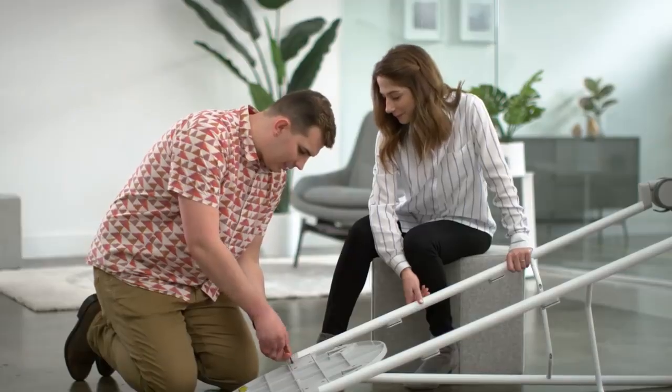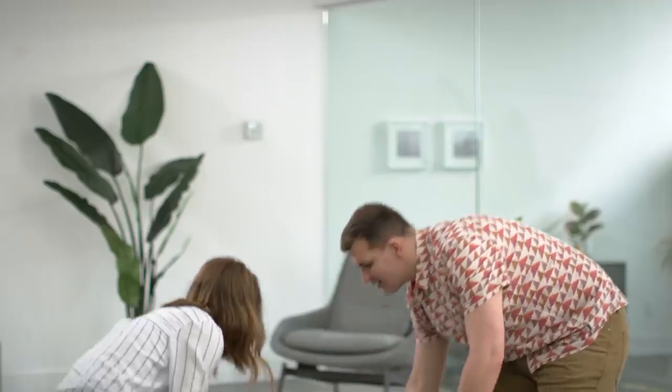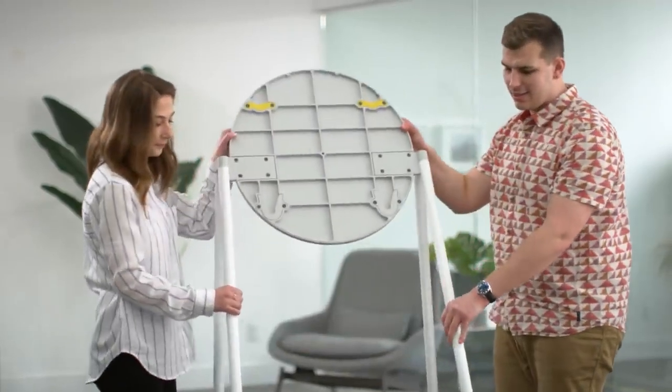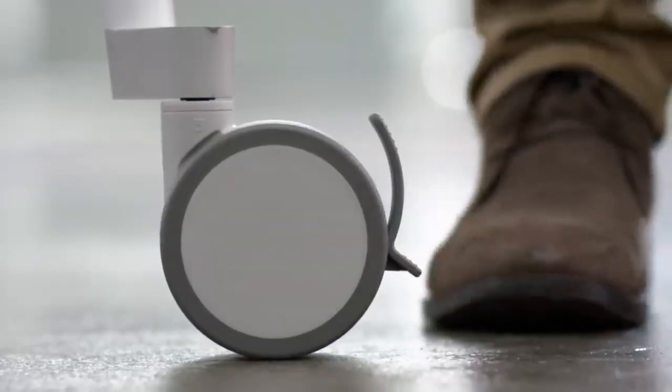Repeat this with the stand's second leg and be sure to tighten the screws firmly in place. Now that the mounting plate is attached, you can stand it right side up and lock the wheels so it remains stationary.